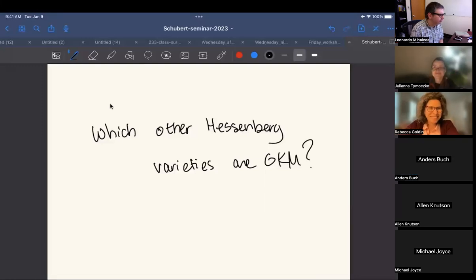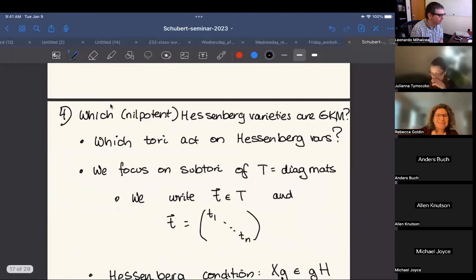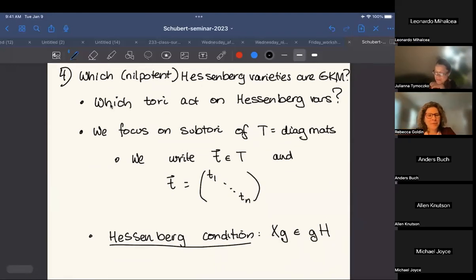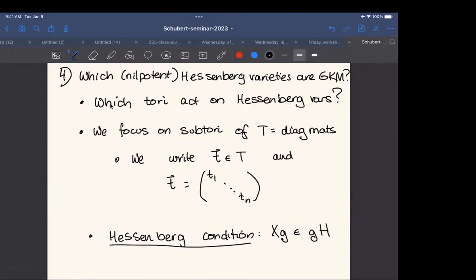So with that introduction, one of the questions that we're actually trying to answer when we're talking about which nilpotent Hessenberg varieties are GKM is: which tori are acting on Hessenberg varieties? That's one question. I've already sort of put nilpotent in parentheses there.